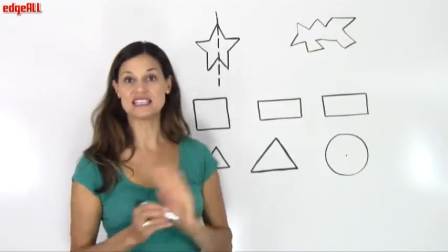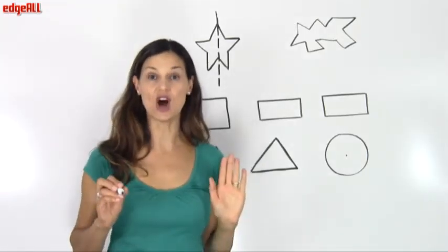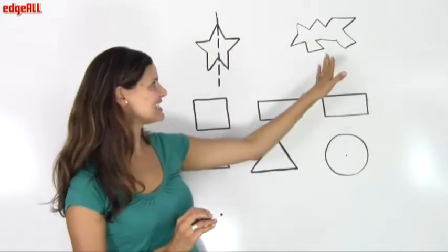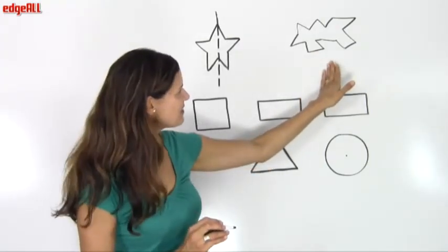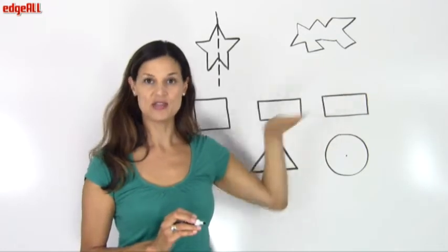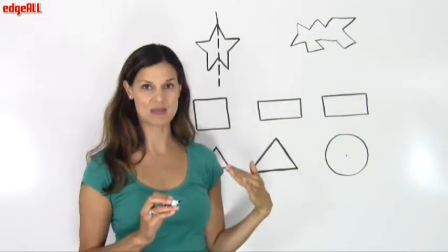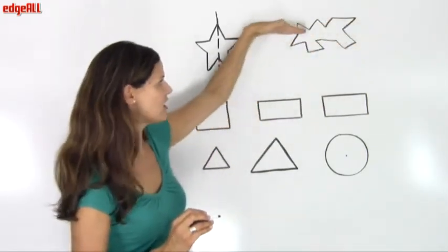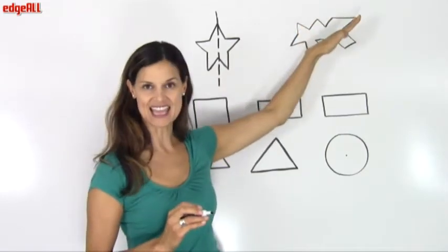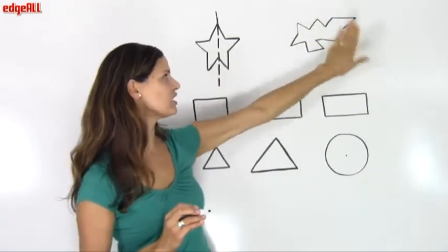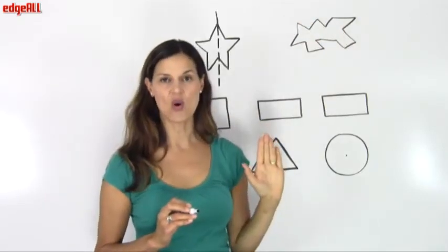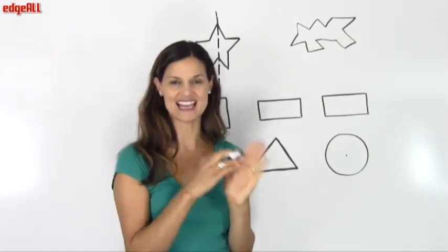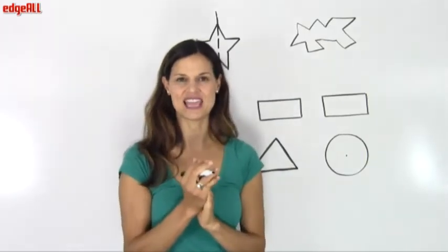Any shape that does not have any lines of symmetry at all is considered an asymmetrical shape. I have an example here of a funny shape that has no symmetry at all. There's no place through the shape where I am able to draw a line — vertically, horizontally, or even diagonally — that would have a mirror image on either side that looks exactly the same, reflected like it was looking into a mirror.